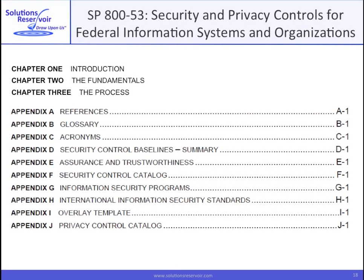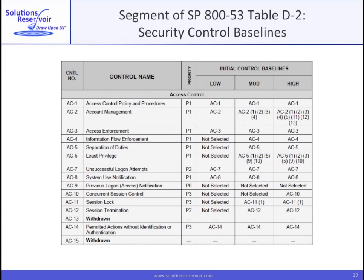SP 853 is a well-written document of some 450 pages. Appendices account for about 90% of it, of which Appendix D, the summary, and Appendix F, the catalog, comprise about two-thirds. Appendix D has 19 tables. Table D1 defines prioritization codes. Table D2, a segment of which is shown here, summarizes 17 control families, and tables D3 through D19 provide further control details per family. Table D2, the summary table, is divided by control family in order, starting with access control. Here you see the control names and numbers of the first 15 controls within the access control family and their control baselines.